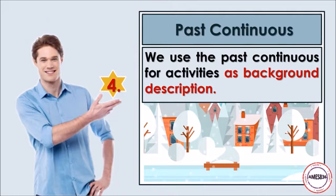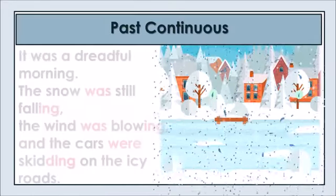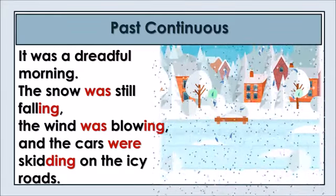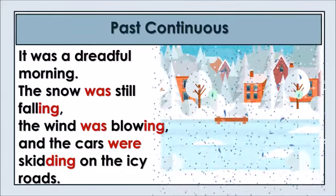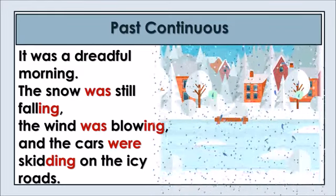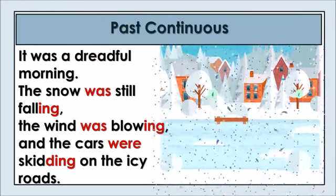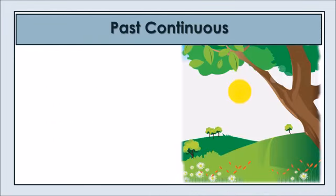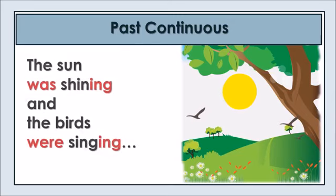We use the past continuous to talk about activities as background description. It was a dreadful morning. The snow was still falling, the wind was blowing, and the cars were skidding on the icy road. The sun was shining and the birds were singing.